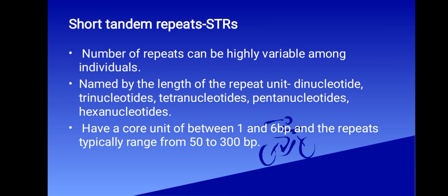Tetranucleotide repeats have become the most popular STR markers for human identification. STR loci are spread throughout the genome, including the 22 autosomal chromosomes and the X and Y sex chromosomes. They have a core unit of between 1 to 6 bp, and the repeats typically range from around 50 to 300 bp. The majority of the loci used in forensic genetics are tetranucleotide repeats, which have a four base pair repeat motif.